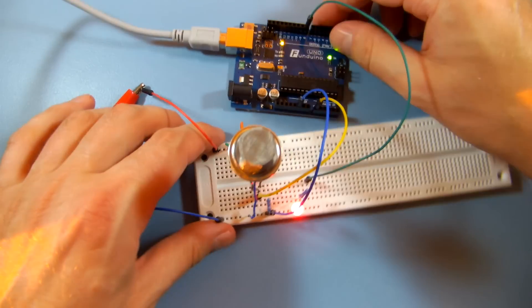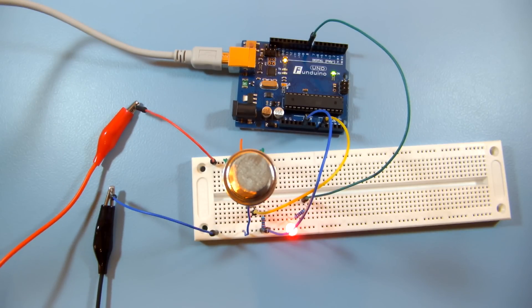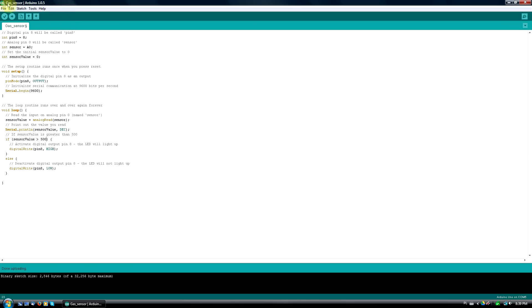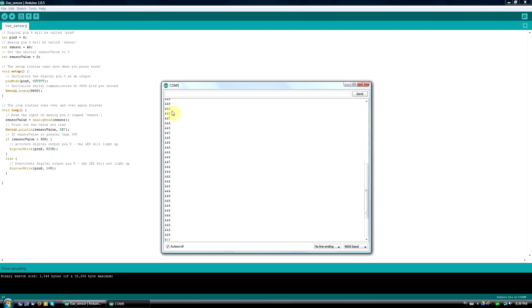Download the code from my website and upload it to your Arduino. You'll find the link in the description below. Now go to Arduino IDE, select Tools, Serial Monitor and you should see a value between 0 and 1023. If your sensor detects gas, the value goes higher.